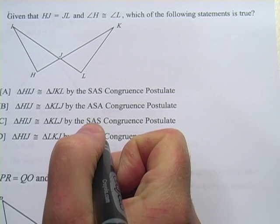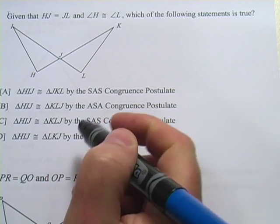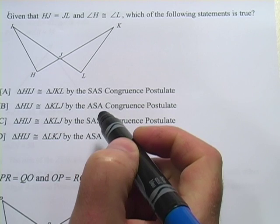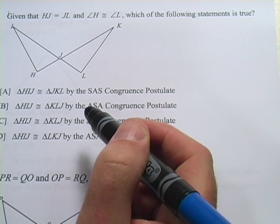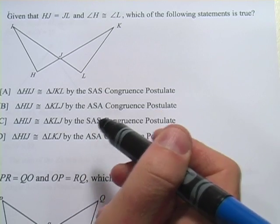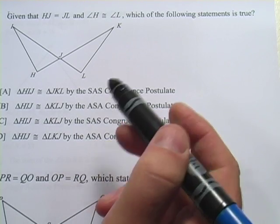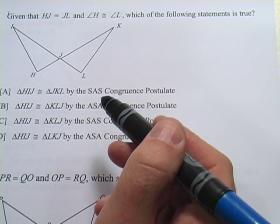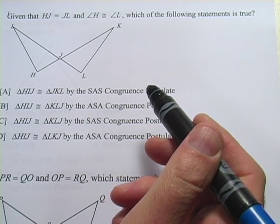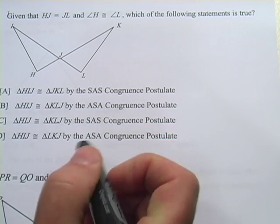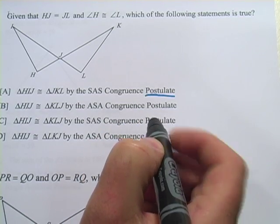In these problems, we're looking at some rules that prove that triangles are congruent to each other. When triangles are congruent, all their sides are going to be the same measures and all their angles are going to be the same measures. That's a congruent triangle. And there are some special rules called postulates that prove that.